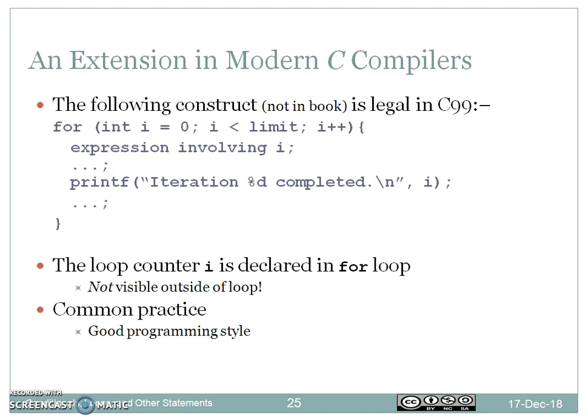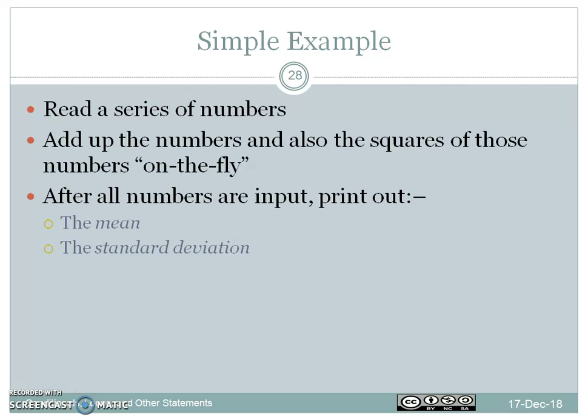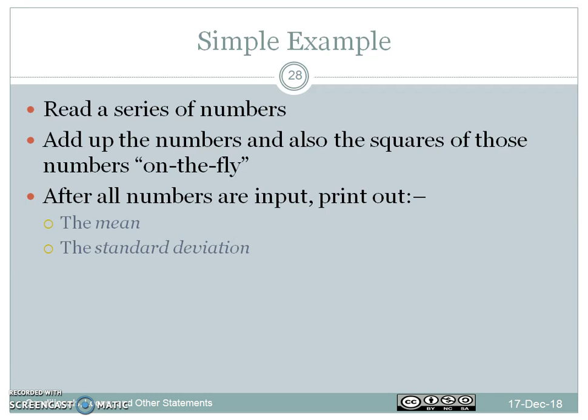In C99, within the for loop's initialization statement, we can declare the variable directly, such as int i, and initialize it at the same time — this is valid in C99. There are also nested loop styles. A simple calculation of mean and standard deviation can be done using any one of the repetitive statements: while, do-while, and for control statements.